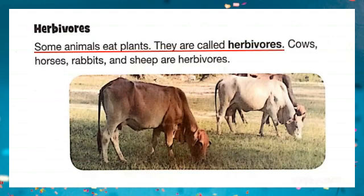Herbivores: some animals eat only plants — they are called herbivores. Underline these lines. Cows, horses, rabbits, and sheep are herbivores. A herbivore is an animal that gets energy from eating plants and only plants. They need a lot of energy to stay alive. Many of them, like cows and sheep, eat all day long. Many herbivores have a special digestive system that lets them digest all kinds of plants, including grasses.